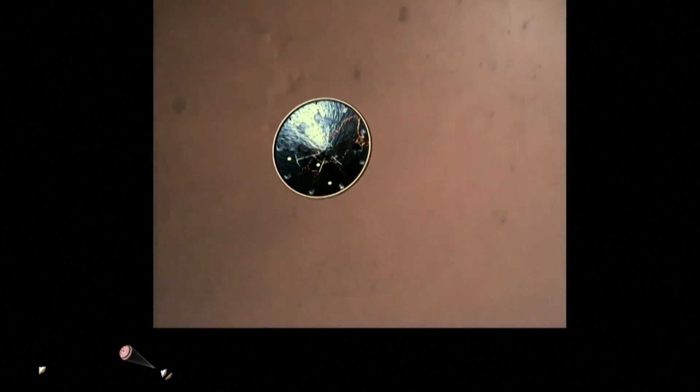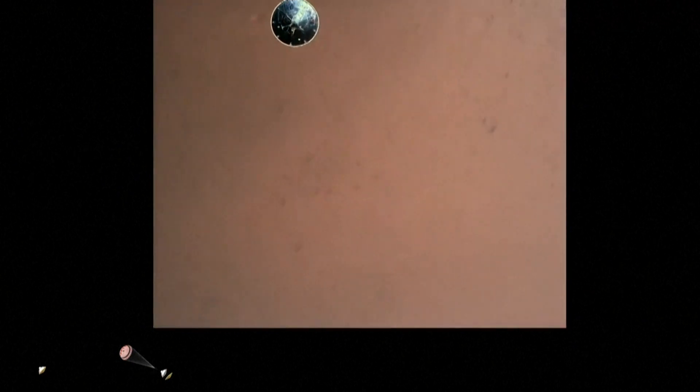Heat shield separated. Perseverance has now slowed to subsonic speeds and the heat shield has been separated. This allows both the radar and the cameras to get their first look at the surface. Current velocity is 145 meters per second at an altitude of about nine and a half kilometers above the surface.